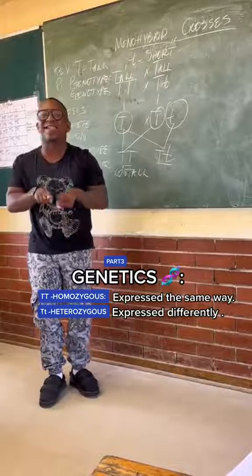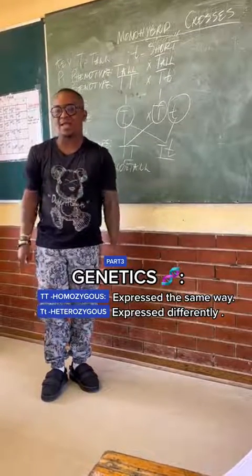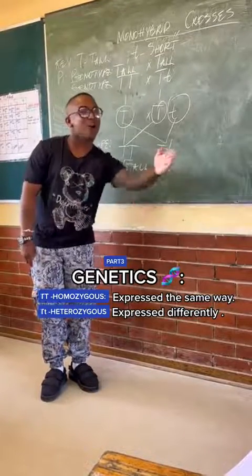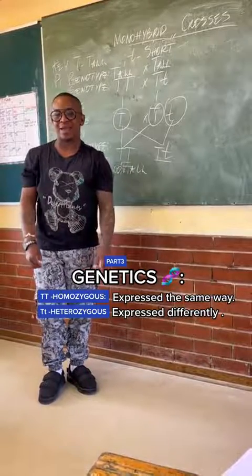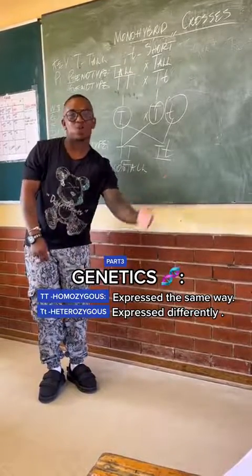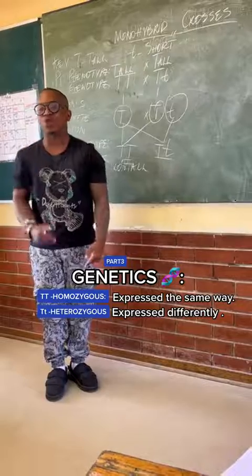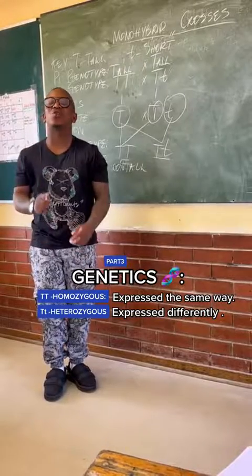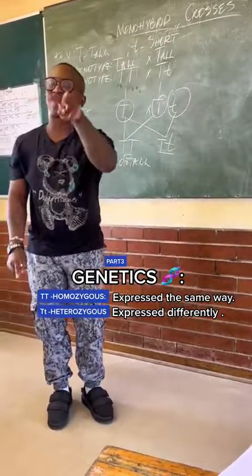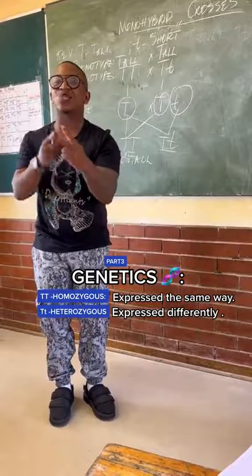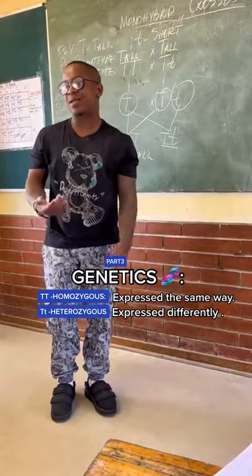Which means one characteristic is expressed alternatively or oppositely. When it is expressed in two ways, there are alternative forms of the same gene.